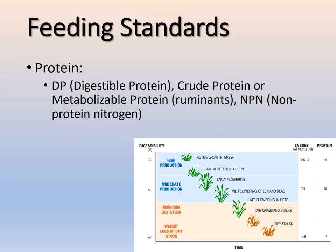For protein terminology in feeding standards, we use digestible protein for most animals, but for ruminants we use crude protein or metabolizable protein, which is very similar. Some standards suggest the biological value, but some don't. For ruminants, we also talk about non-protein nitrogen in the diet. There's also a table showing the different digestibility percentages of various forages — as the maturity of the plant increases, digestibility decreases.